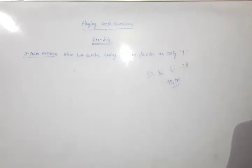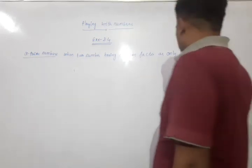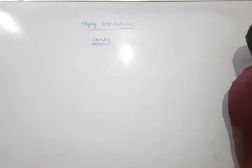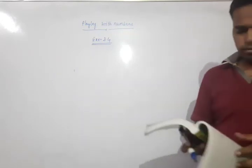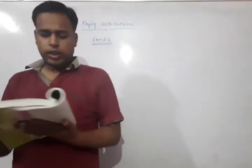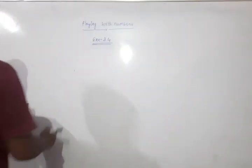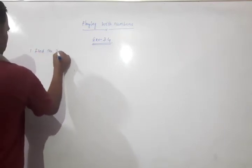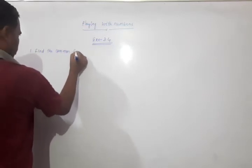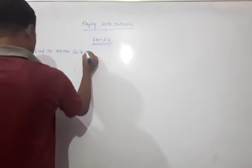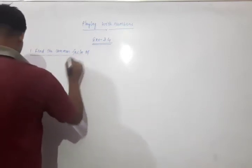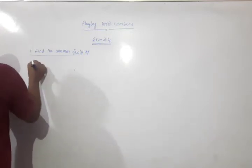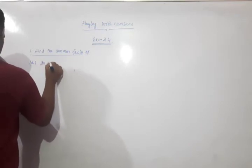Now moving to Exercise 3.4. We will see question number 1: find the common factors. There are four questions total; I will do two and you will do the remaining two. First: find the common factors of 20 and 28.